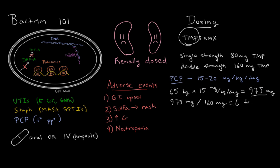So what do we do with 6 tabs? We don't give all 6 at once — the maximum number of tabs a patient can tolerate at any one time is 2 tabs. So instead we give 2 tabs three times per day. Now it's your turn: let's say we have a patient who's 80 kilograms. Pause the video and try to figure out how you would dose this person's Bactrim.